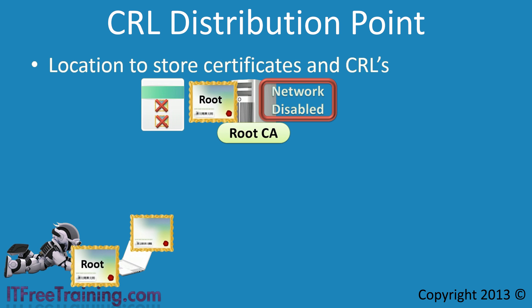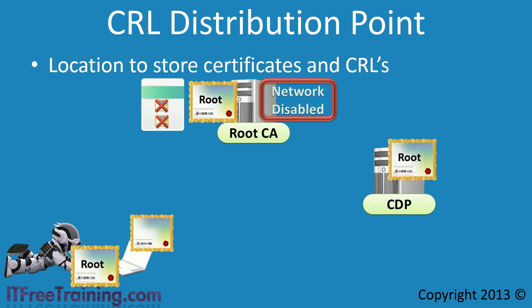The client could also make use of an online responder to verify a certificate if it was configured to do so, but the CRL still needs to be available on the network, either for the online responder to access or the client to access directly. A CDP should have the certificates for the CAs on your network as well as the certificate revocation list. In this video, I will look at setting up CDPs to use IIS and file sharing, and I will also store the certificate and certificate revocation list in Active Directory.